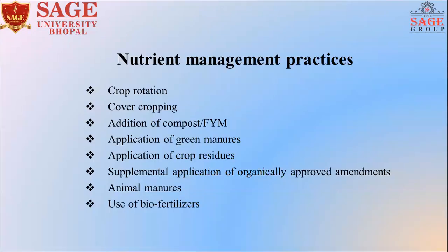Now, nutrient management practices in organic farming. First is crop rotation — we rotate the crops season-wise but not the field. This is called crop rotation. Second is cover crops. We grow cover crops like legumes, which protect the soil from water erosion. They help break the intensity of rainfall so water enters the soil at a lower intensity. Ultimately, we can achieve good soil health.